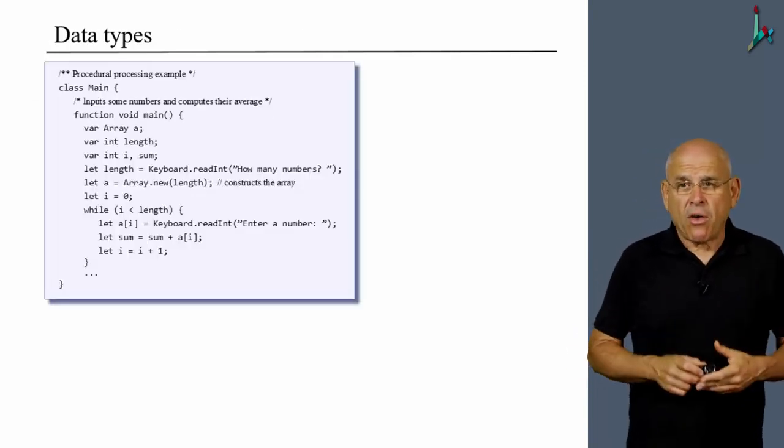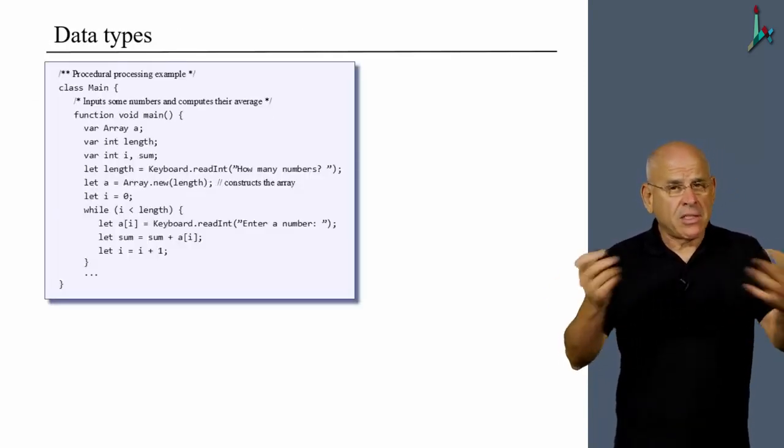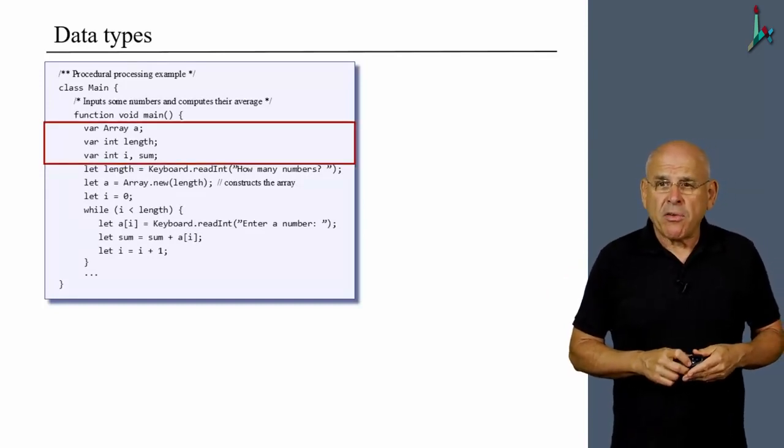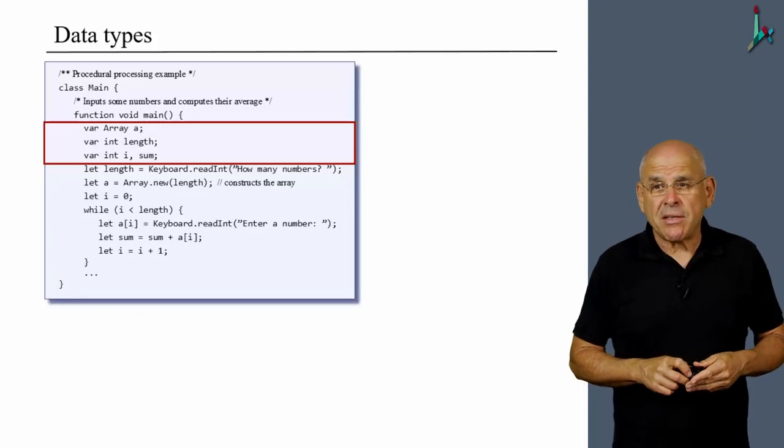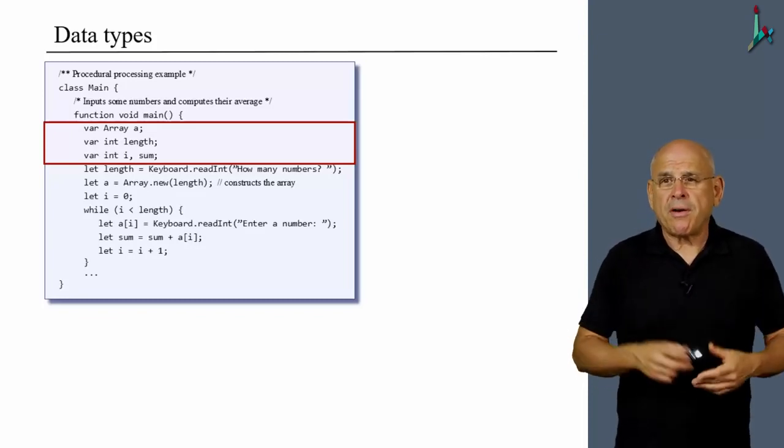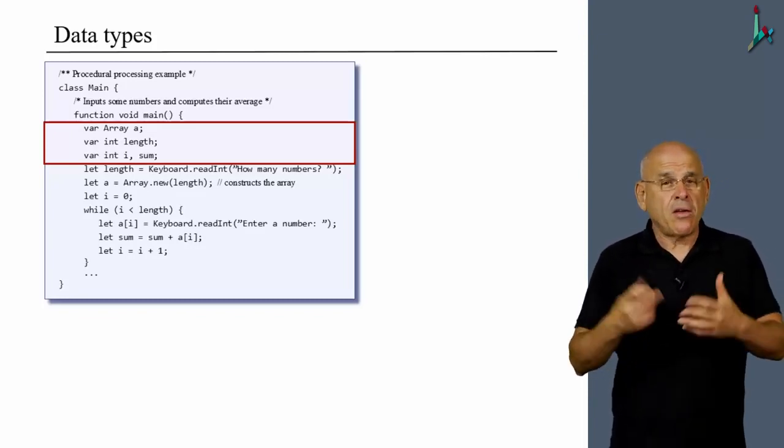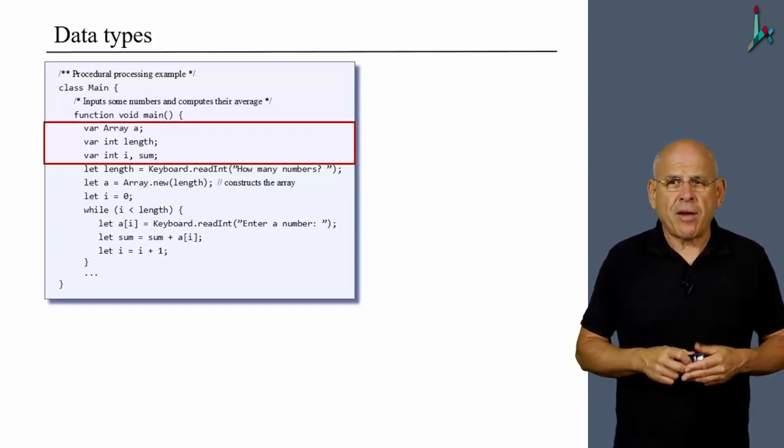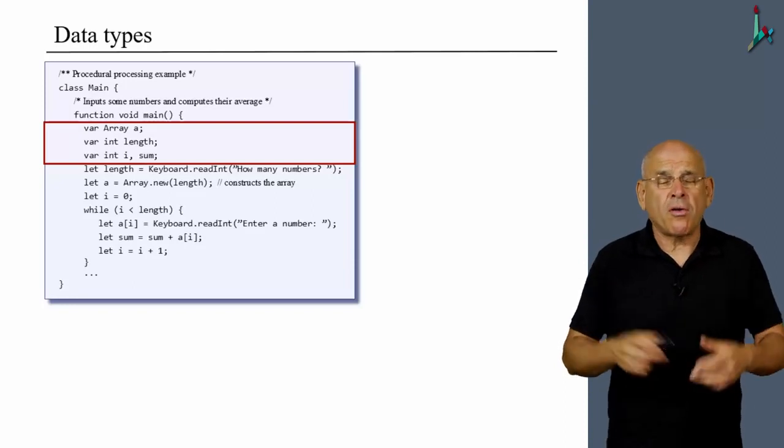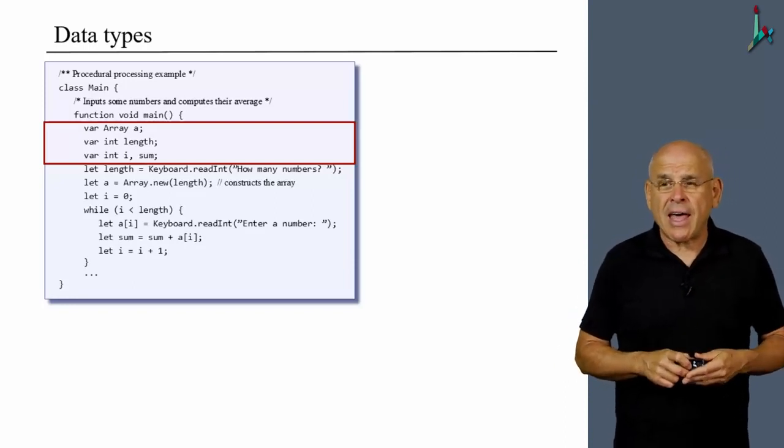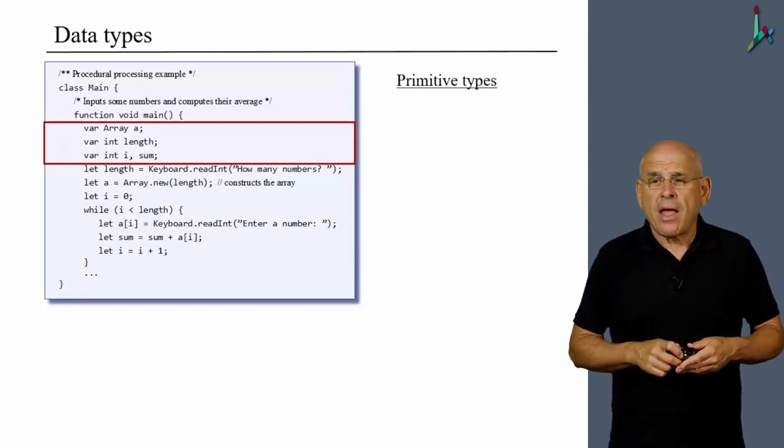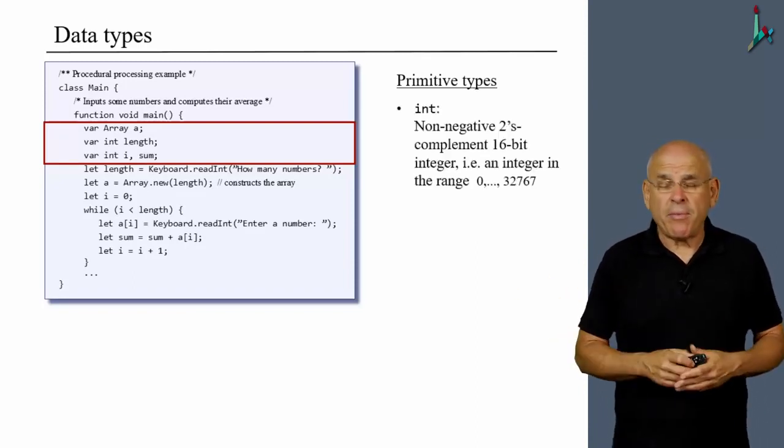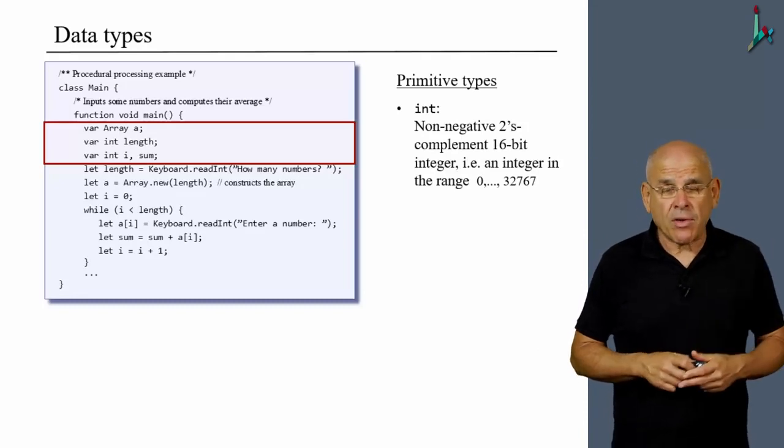Here's some Jack code that does something. It's not terribly important what the program is doing. Let us focus on these three statements here, in which the programmer creates an array called a, an integer variable called length, and two more integer variables called i and sum. What we see from this is that the Jack language has, first of all, primitive types, of which we have three only.